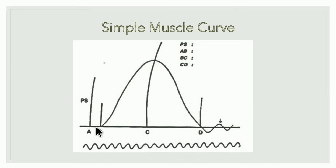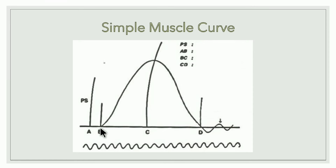The A-to-B period is the latent period. At point A we have stimulated the muscle — this is the point of stimulus — but the muscle has not yet responded. Latent means hidden, so this period is known as the latent period because the muscle is not responding in spite of stimulation. After that, from point B the muscle starts to contract and the graph starts rising.